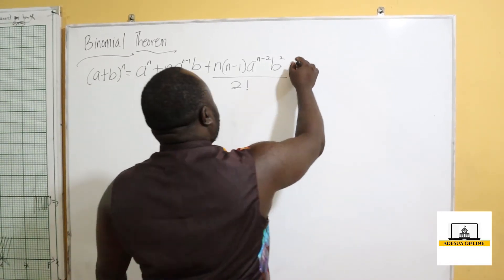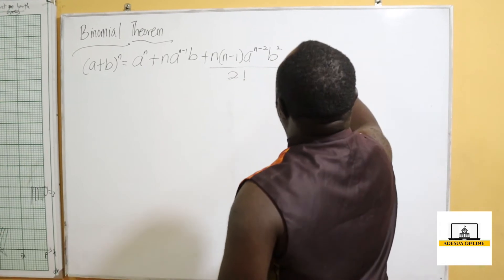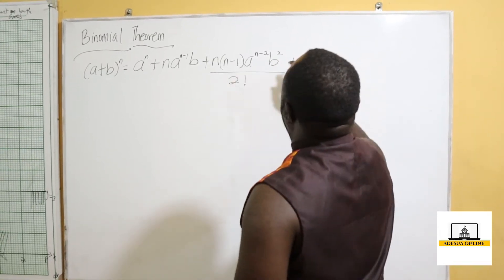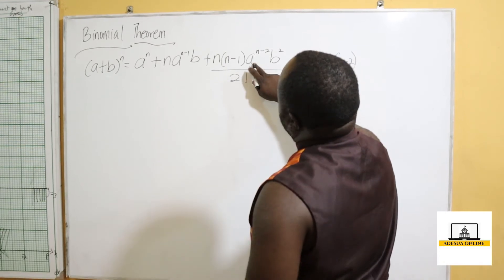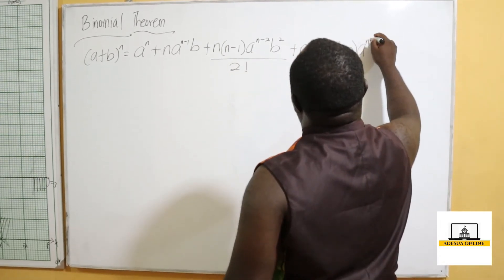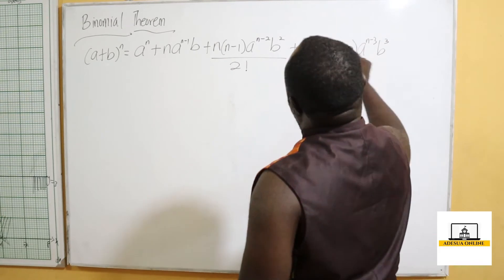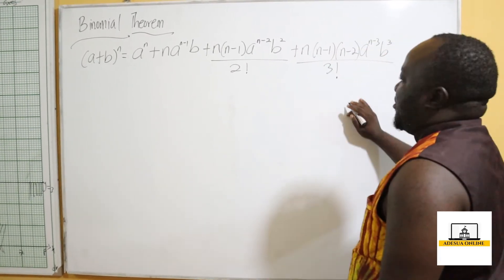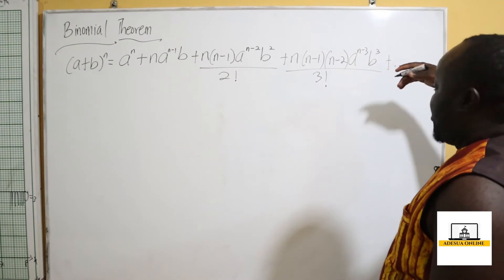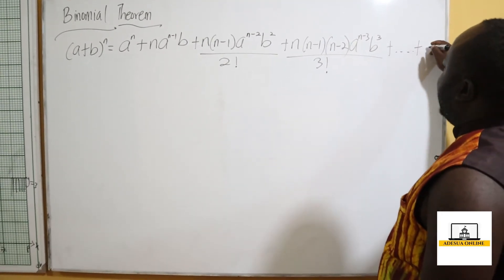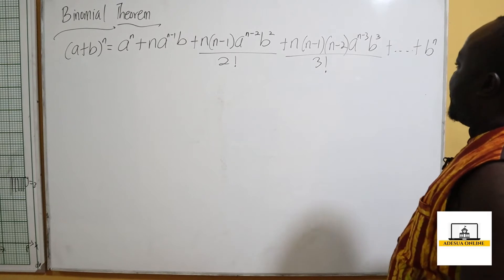Plus, we go again: n times n minus 1 times n minus 2, times a raised to the power n minus 3, then b raised to the power 3, all over 3 factorial. We continue with more terms, plus the last term, which is b raised to the power n.